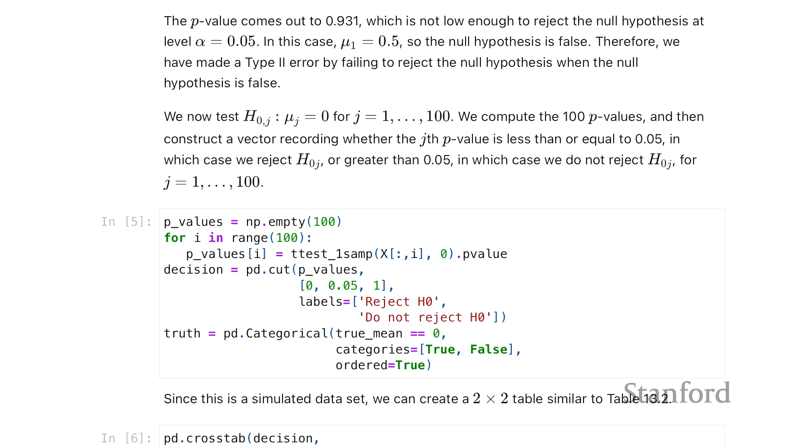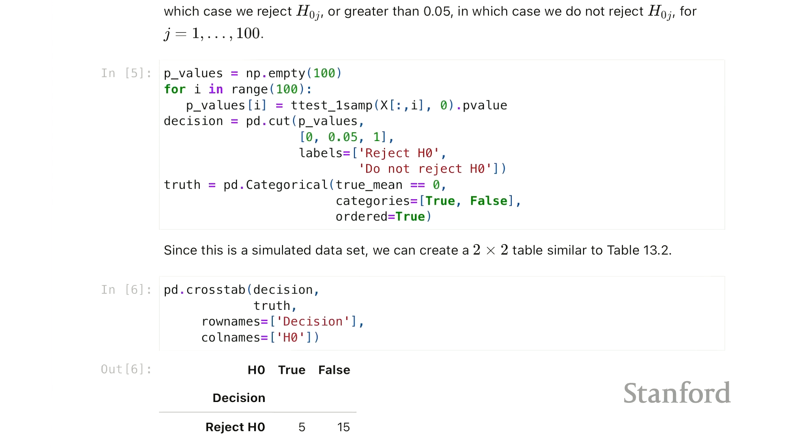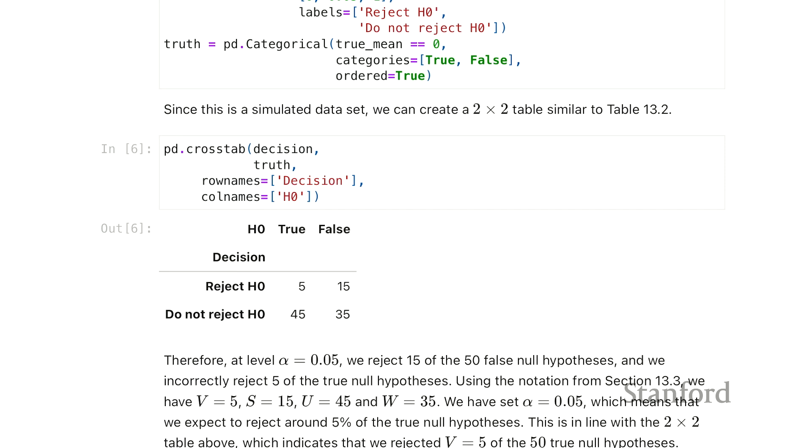If we choose to threshold at 0.05, we're going to just cut the p-values at 0.05 and take a look at how these 100 different p-values behave. So we'll make a little table, a 2x2 table, similar to a table you can see in the textbook. The columns indicate whether in truth the null hypothesis is true or false. And this is our decision, whether we reject it or did not reject H-naught.